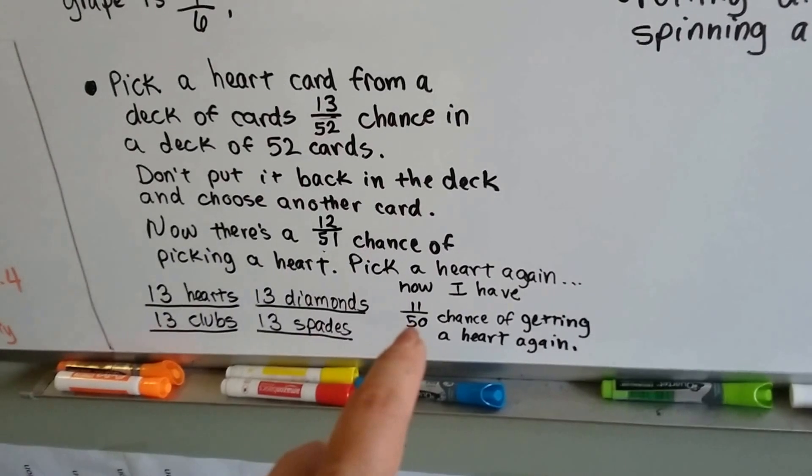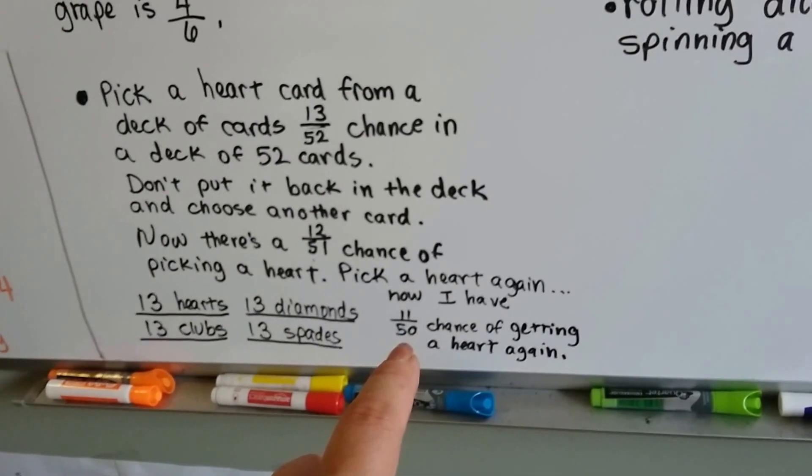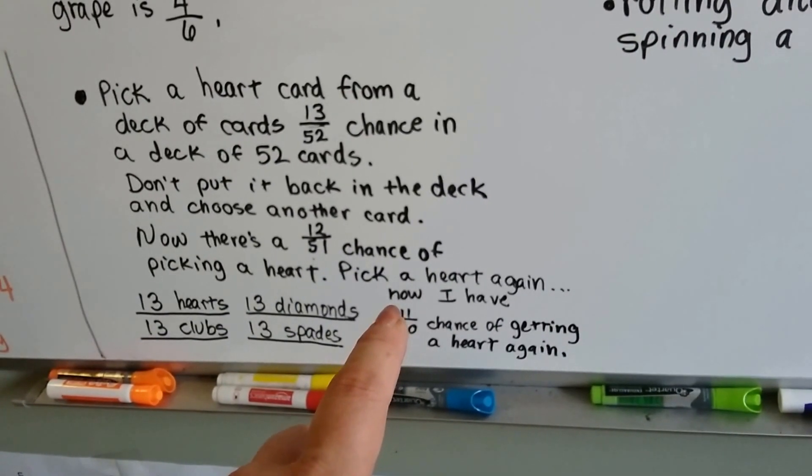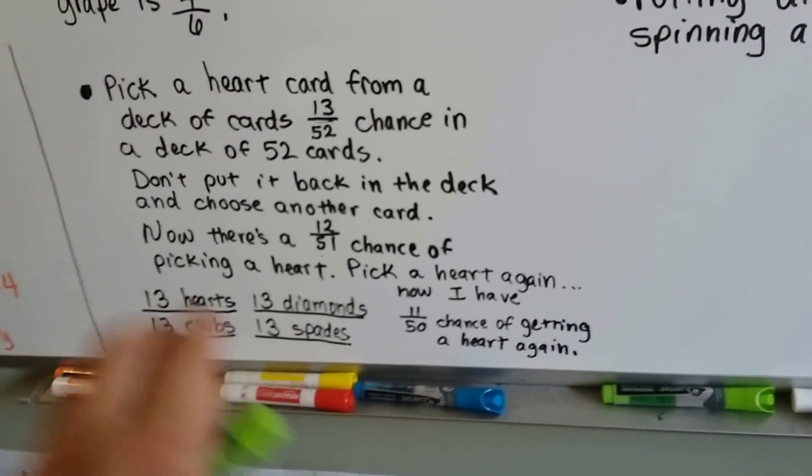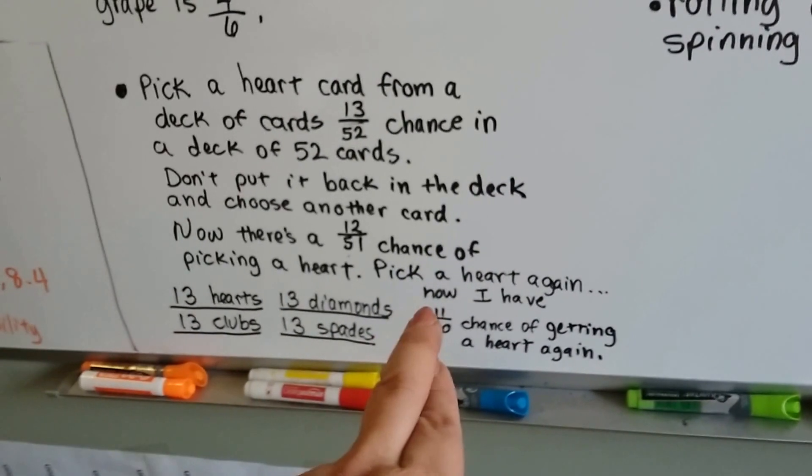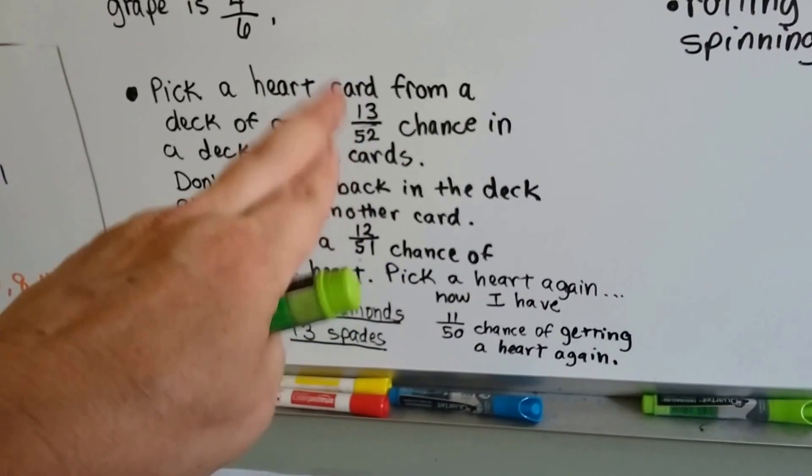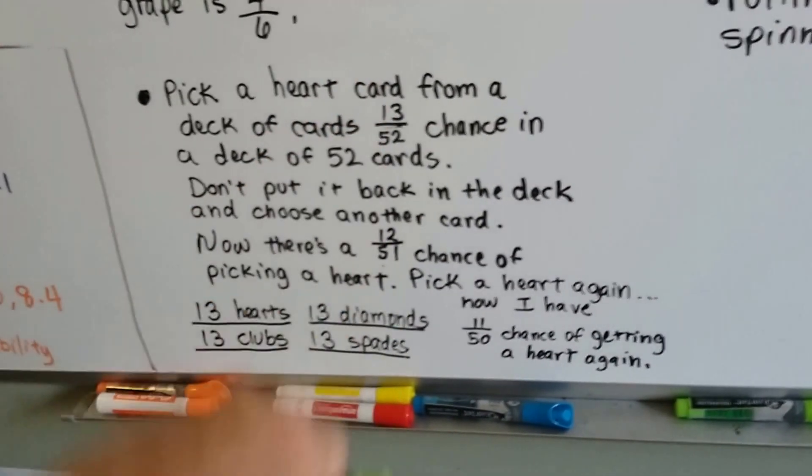Now I've got an 11 out of 50 chance of getting a heart card, because now there's only 11 hearts in the deck out of 50 cards in the deck. Because the two are off on the side. See? And this is dependent on what I did before, because I didn't put them back and I picked them out.